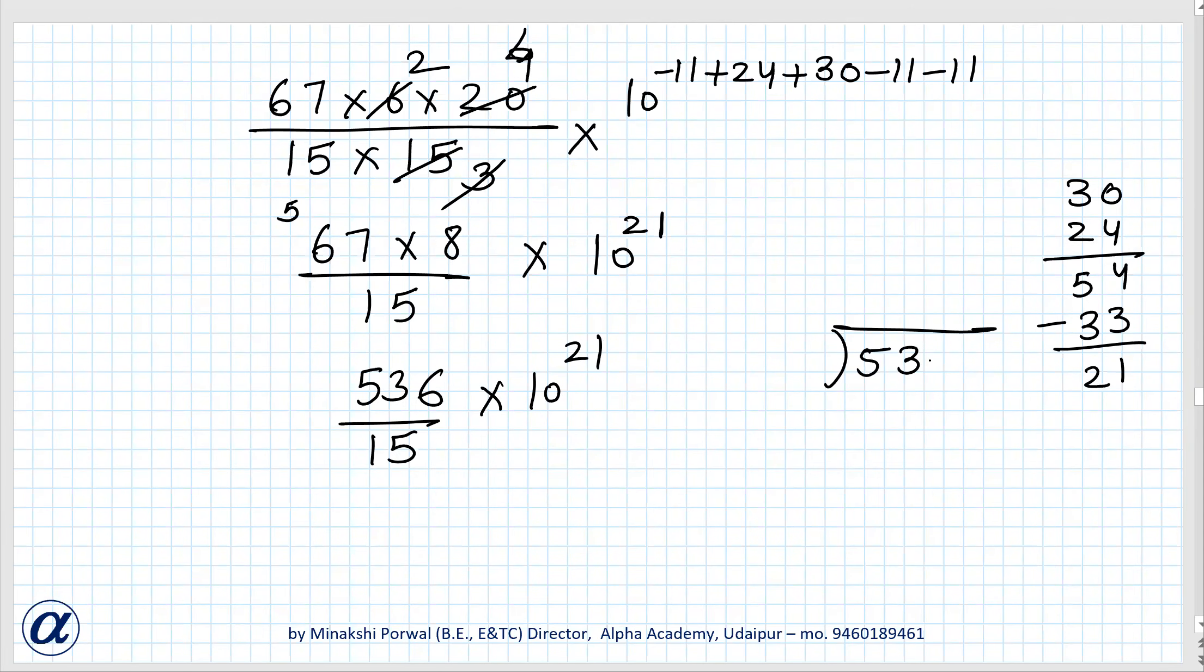So 536 divided by 15. 15 threes are 45, so 13 minus 5 that is 8, 86. 5 fives are 75, 11 decimal point 110. 10 sevens are 15 sevens are 105 and it will go on. So it is enough we can write this 35.7 × 10²¹.